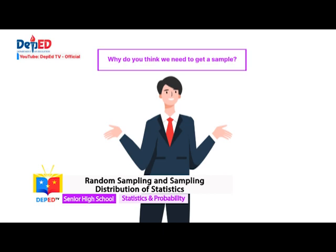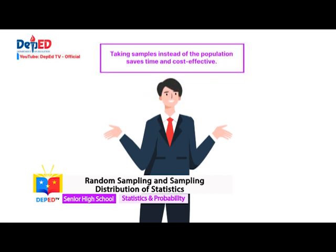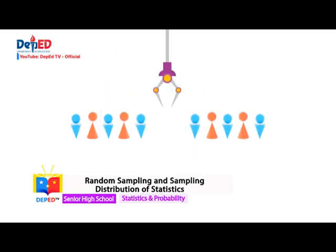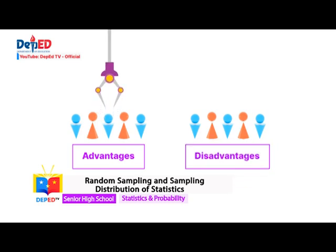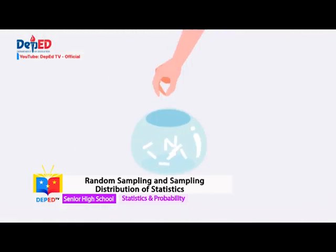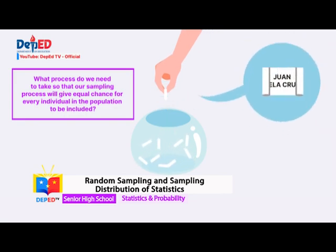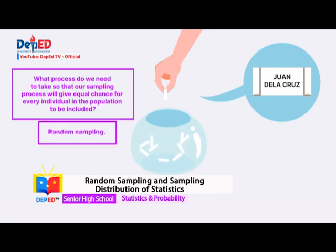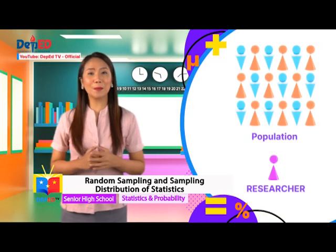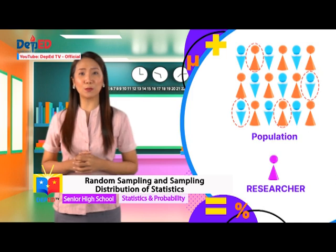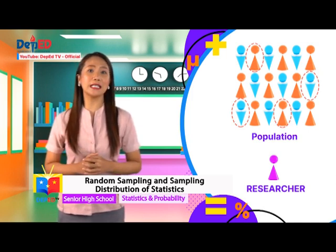Why do we need to get a sample? Taking samples instead of the whole population saves time and is cost-effective. Although we need to be careful in the process of sampling because while it has its advantages, it can also be a source of bias and inaccuracy. The process that gives every individual in the population an equal chance of being included is random sampling. Random sampling is a method of choosing representatives from the population wherein every sample has an equal chance of being selected.